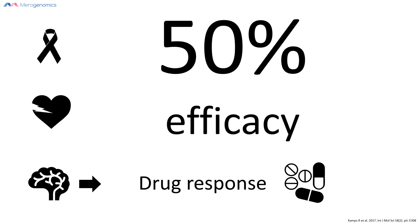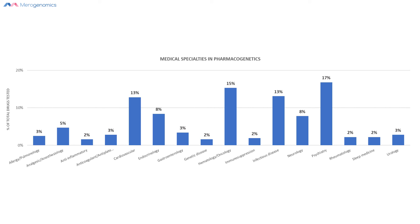Now we can link how medications might respond based on individuals' genetics, and that is the greatest benefit to this group. To illustrate this point, here's how all known medications that can be linked to personal genetics are distributed throughout different medical specialties. Neurology and psychiatry comprise the largest group.